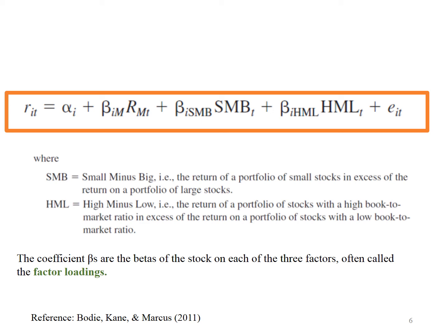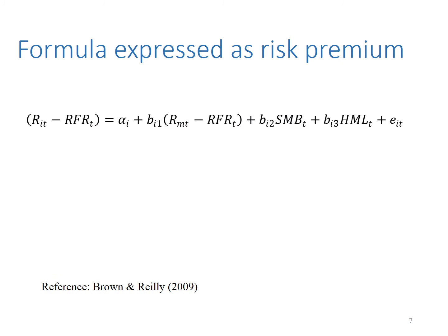Growth stocks normally have a low book-to-market ratio, whereas value stocks have a high book-to-market ratio. The coefficient beta is the beta of the stocks on each of the three factors, often called the factor loadings. The formula can also be expressed as a risk premium, which is return minus risk-free rate.